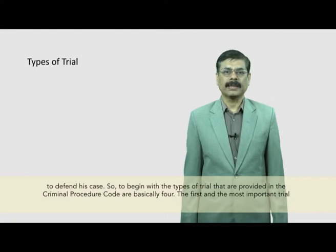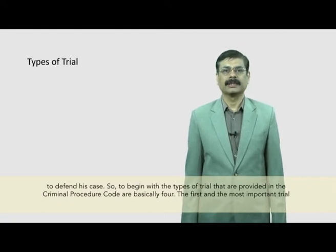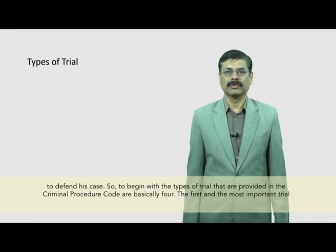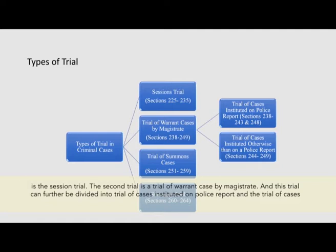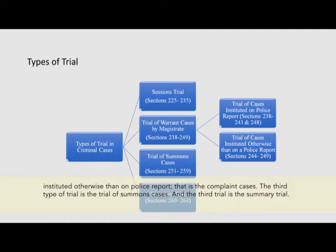The types of trials provided in the Criminal Procedure Code are basically four. The first and most important is the session trial. The second is the trial of warrant case by magistrate, which can be divided into trial of cases instituted on police report and trial of cases instituted otherwise than on police report — that is, the complaint cases. The third type is the trial of summons cases and the fourth is the summary trial.